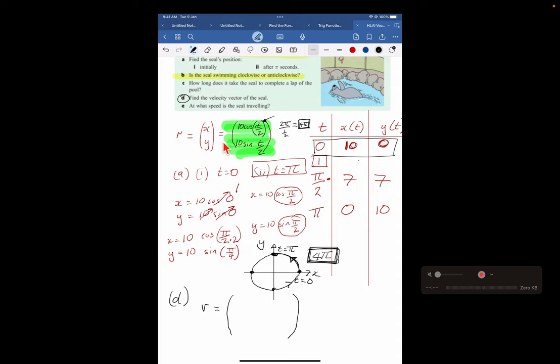So for D, the velocity vector - we go ahead and differentiate 10 cos t over 2. Cos becomes negative sine. The 10 stays where it is. We times by the derivative of the inner, which is a half. Now the bottom one, the derivative of sine is cos, so that stays 10. That flips to cos of t over 2, times by the derivative of the inner, which is a half. Therefore, this tidies up nicely into negative 5 sine t over 2, and this is 5 cos t over 2. And there's your velocity vector.